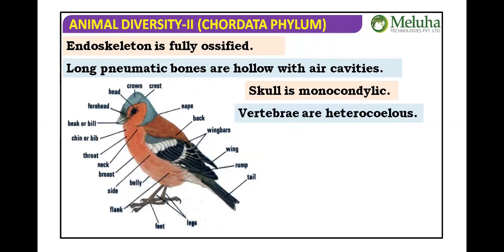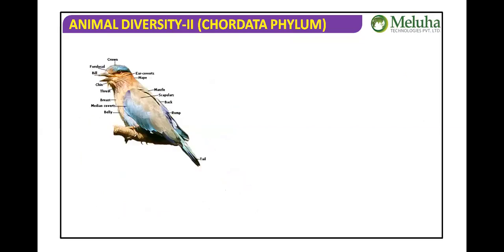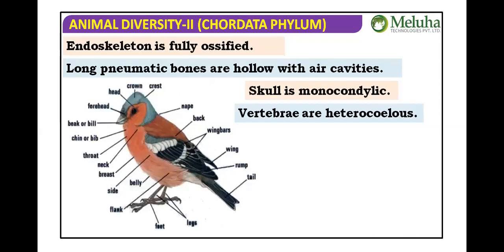The vertebrae are heterocoelous — saddle-shaped — which is different from the procoelous, amphicoelous, and opisthocoelous types seen in other vertebrates. In birds, the vertebrae have this unique saddle shape.